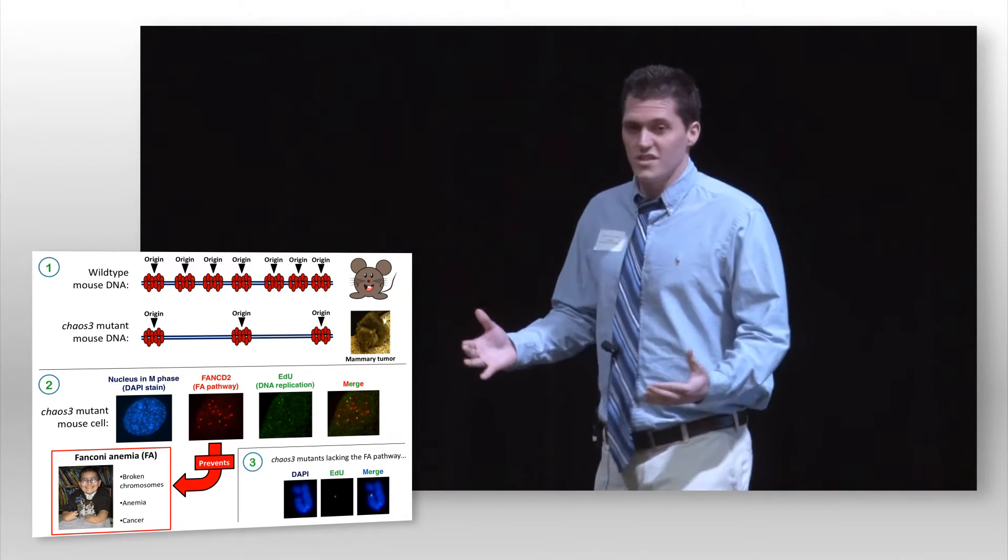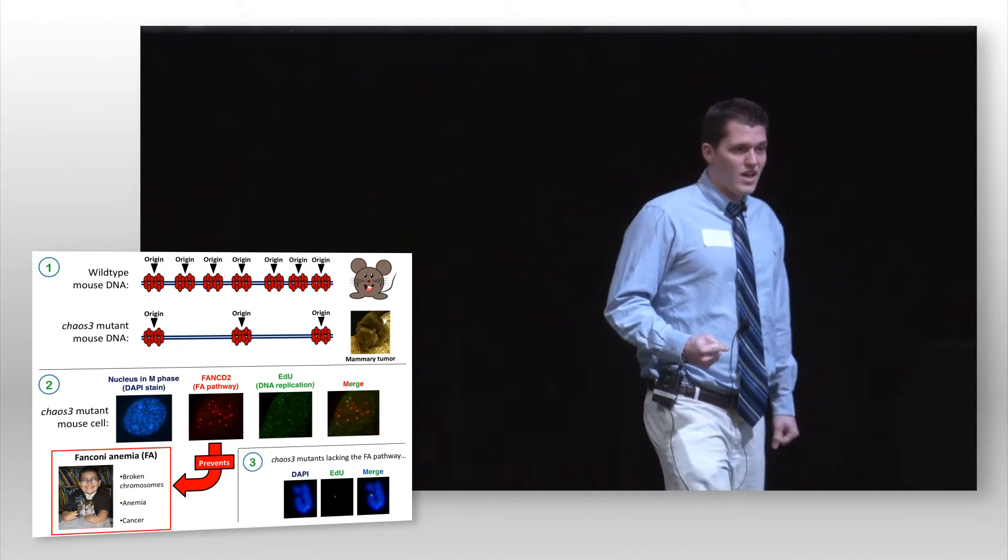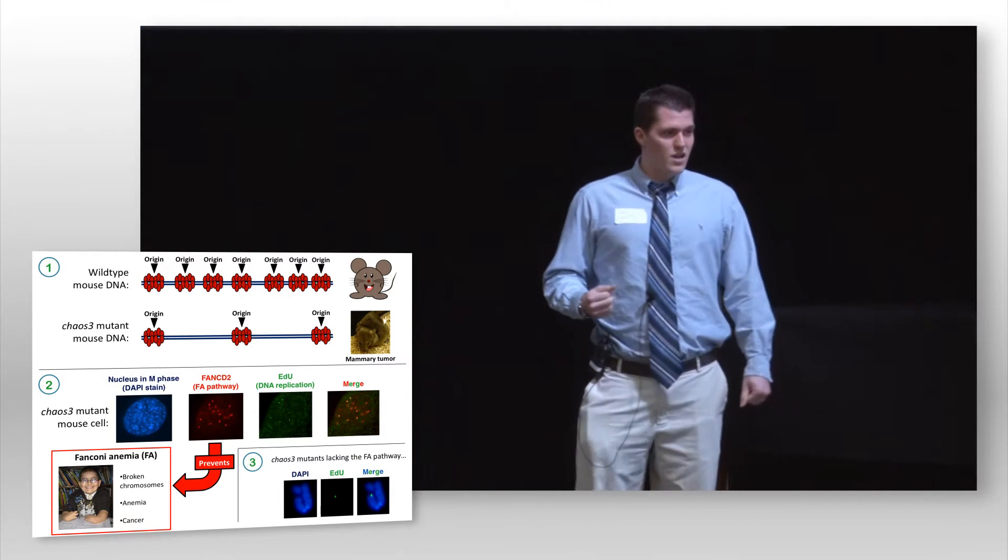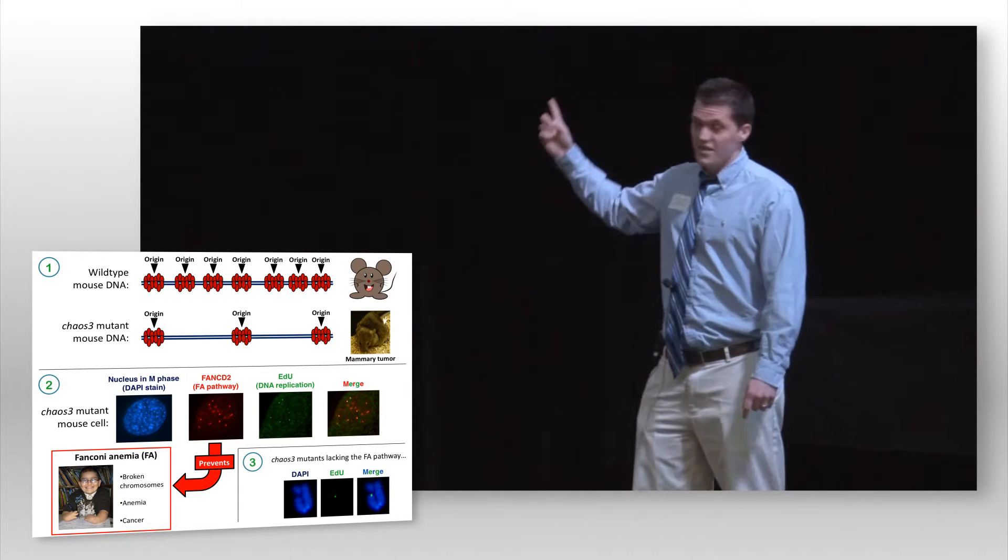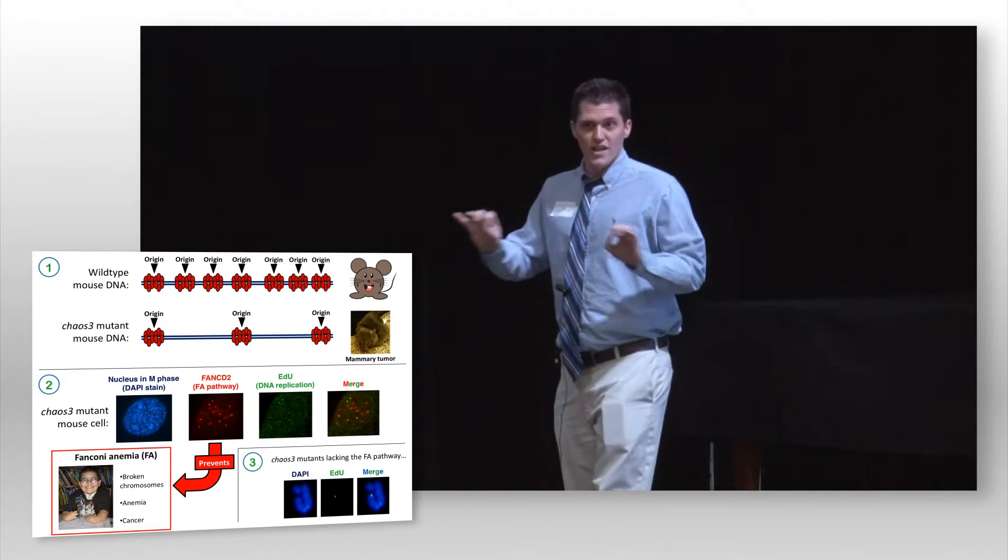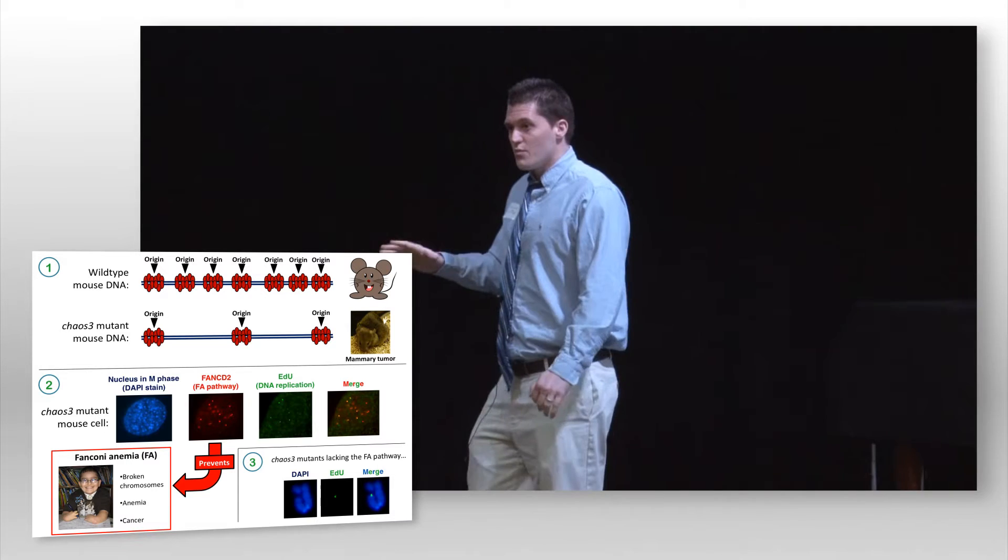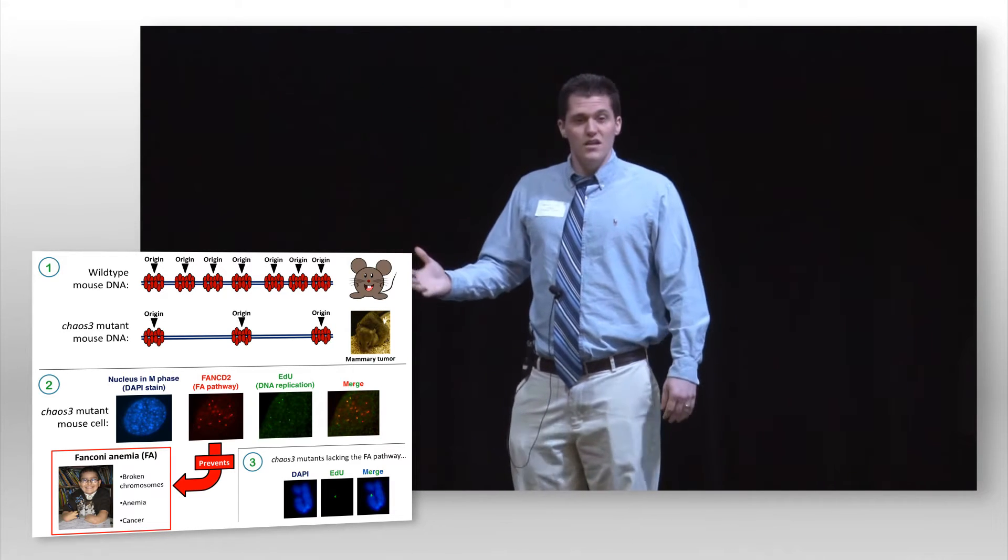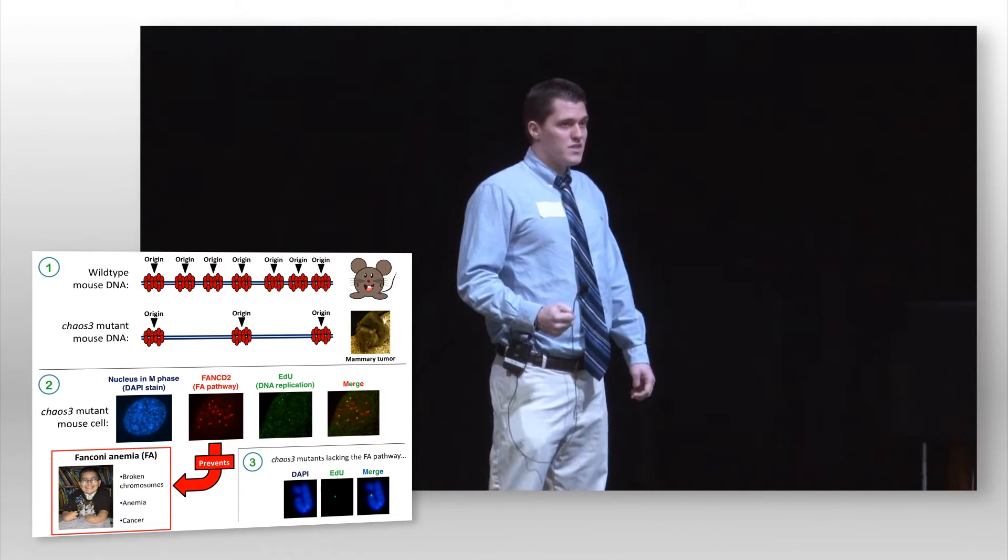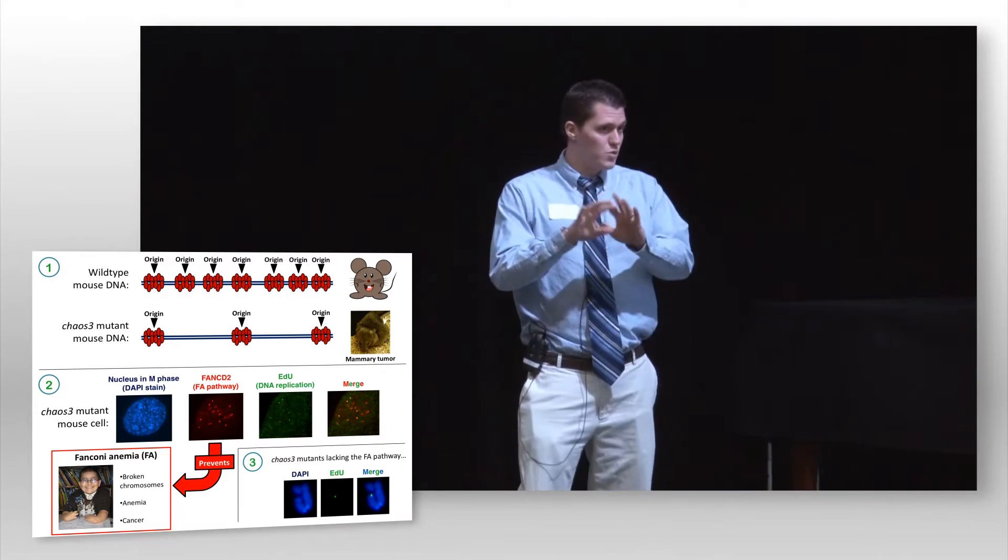To answer this important question, my thesis work has utilized a unique mutant mouse model called CHAOS-3 that's depicted in number one. The blue lines represent DNA, while origins, the points at which replication begins, are determined by the binding of MCM protein complexes, the double red rings.